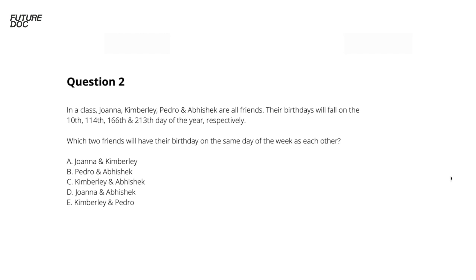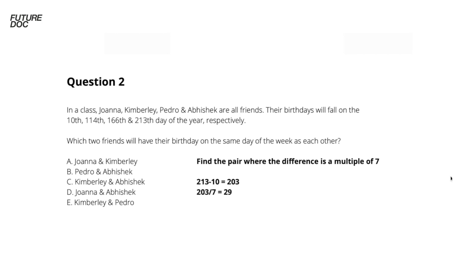So let's have a look — I've written it on a slide here. Find the pair where the difference is a multiple of seven. So 213 minus 10 is 203, divided by seven is 29. That means the first and the fourth — Joanna and Abishek — are the correct ones. That's fairly easy once you know how to do it. I hope that helps you understand how to approach these types of maths questions: just being intelligent about working out the quickest way to get what you need.